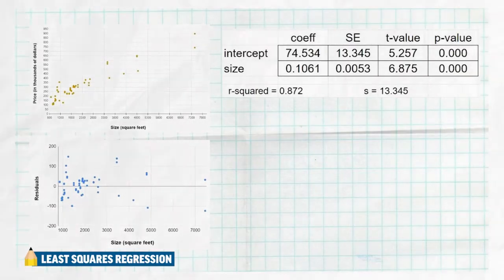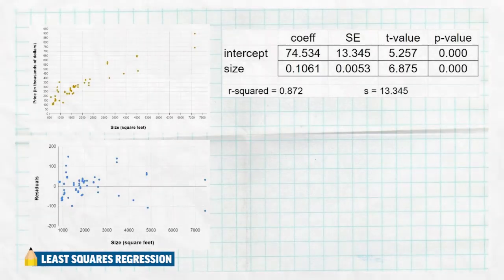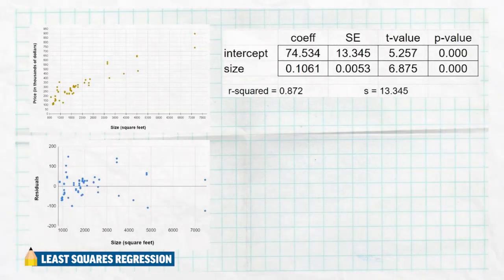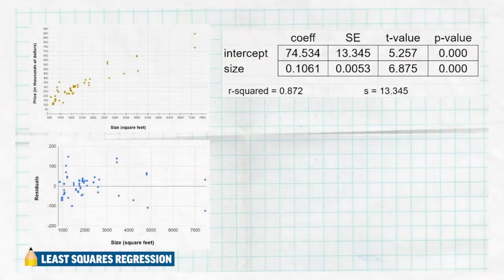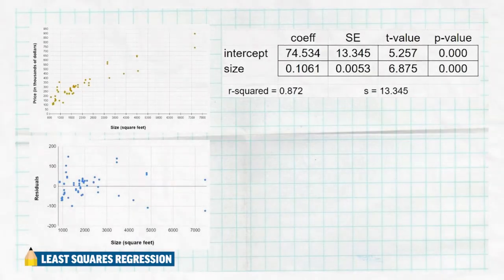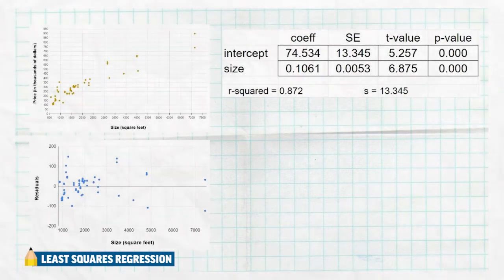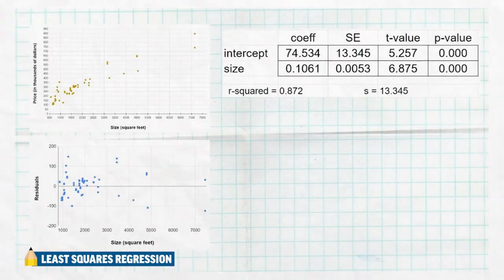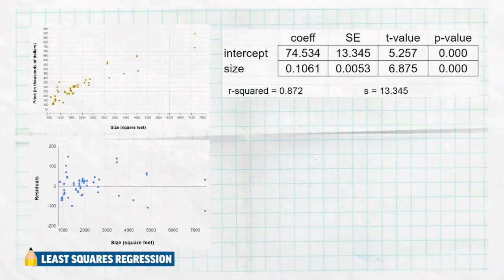In the computer output table, the first column goes in alphabetical order — A then B. Our y-intercept is 74.3534. The interpretation: when a house has zero square feet, we predict the price to be about $74,000. However, this doesn't make much sense in context — that's extrapolation, since our houses started around 800 square feet. A house with zero square feet wouldn't really be a house, but the interpretation is what it is based on the value.